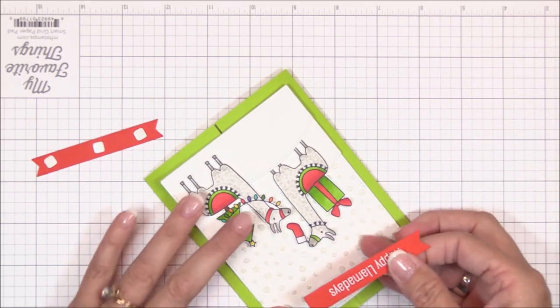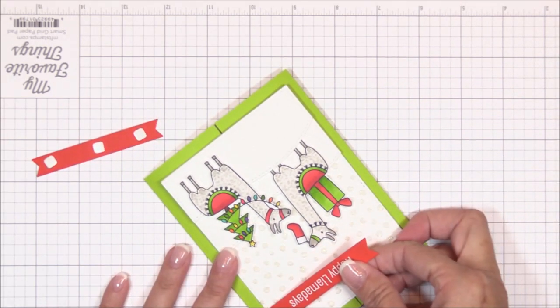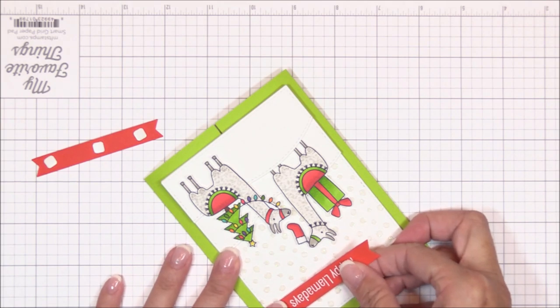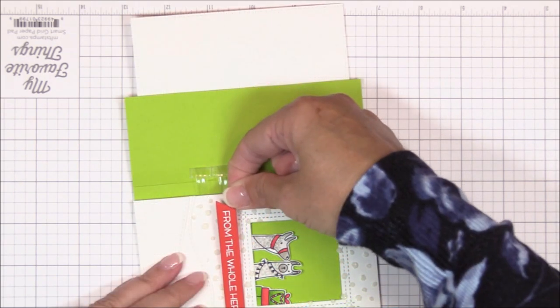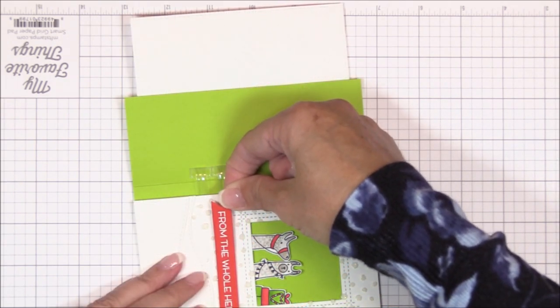Off camera, I stamped the Happy Llama Days sentiment onto some poppy card stock with sweet tooth pigment ink, heat embossed it with white embossing powder, and die cut it using the stitched sentiment strips. I'm adhering it to the image panel using thin 3D foam squares.